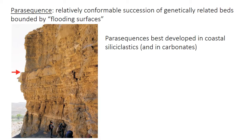So if you read about sequence stratigraphy elsewhere, you're likely to encounter this term: the parasequence. A parasequence is defined as a relatively conformable succession of genetically related beds bounded by something called a flooding surface. The traditional parasequence is a shallowing upward succession from offshore to shoreface that's then capped by abrupt deepening back to offshore, like in the picture here.